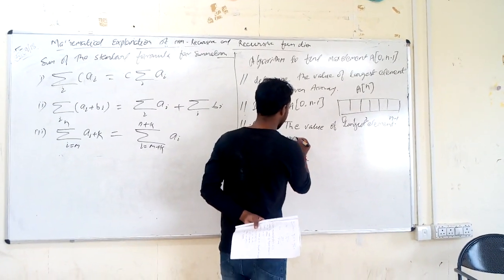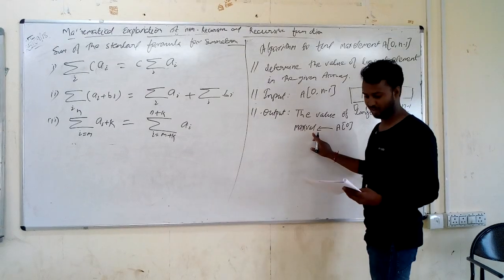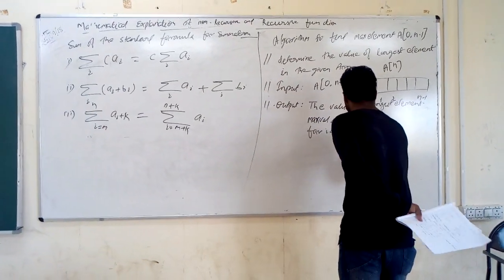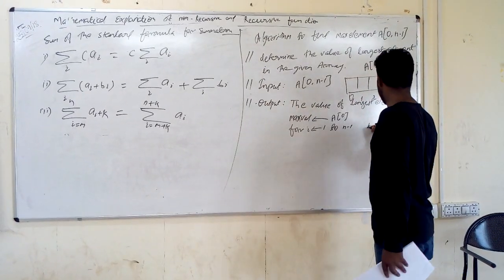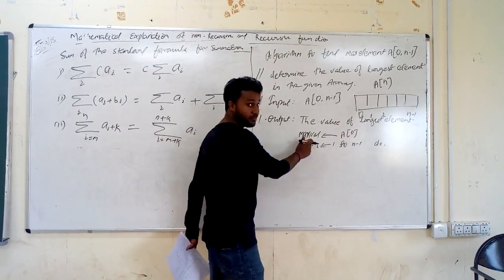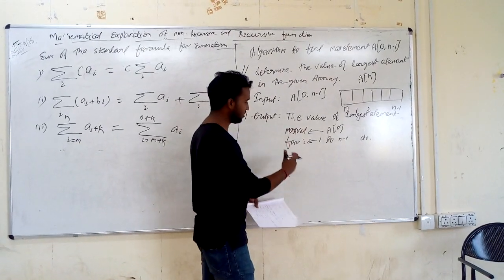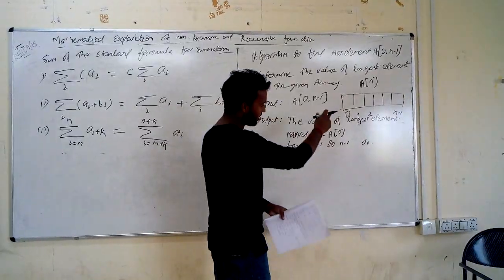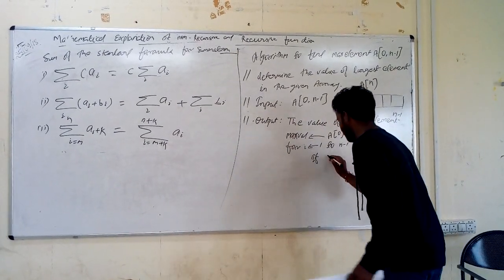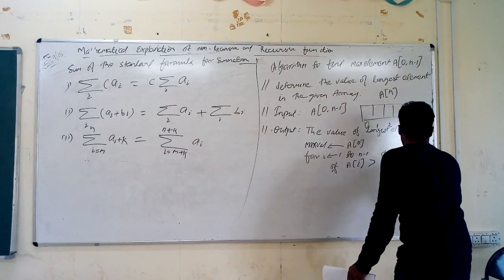First, we assign the maximum value as A[0] — we first assume A[0] is the maximum. Then i starts from 1 to N minus 1. We assign the first array index value, then use a for loop to iterate through the array.